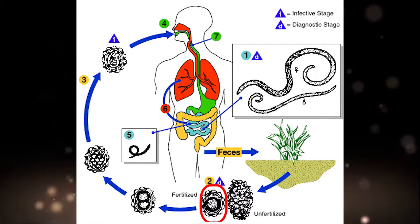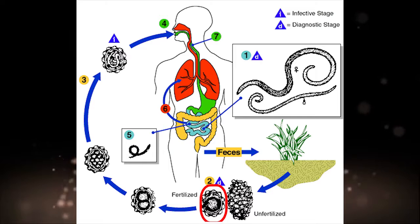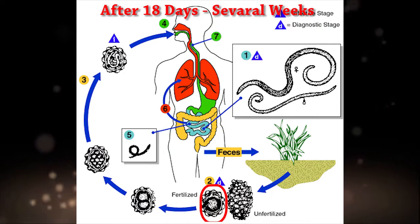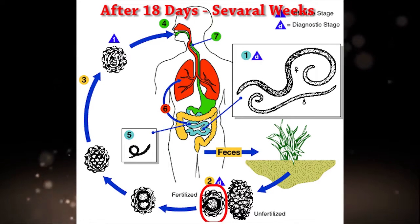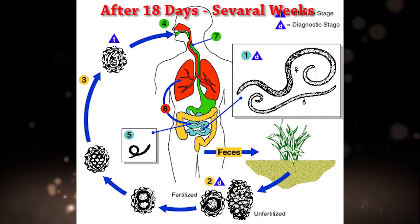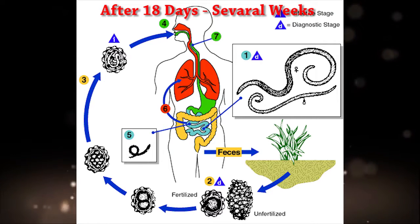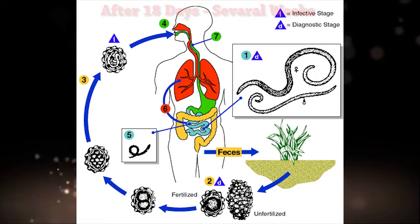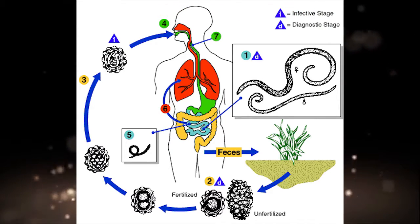Fertile eggs embryonate and become infective after 18 days to several weeks, depending on environmental conditions. Optimum conditions include moist, warm, shaded soil.